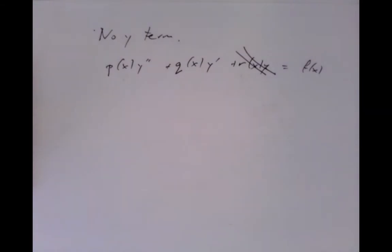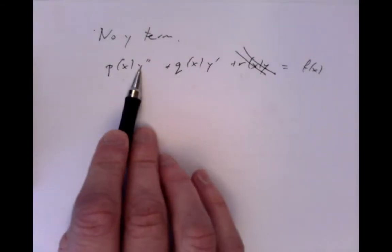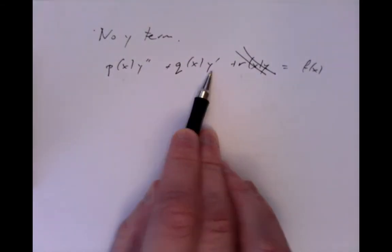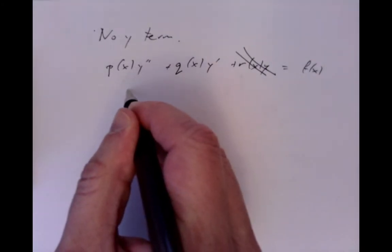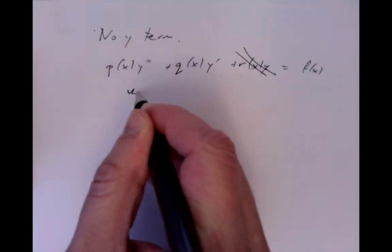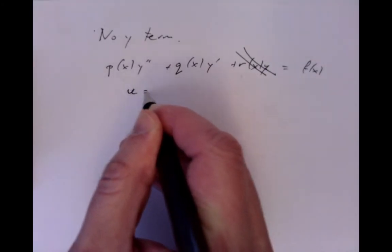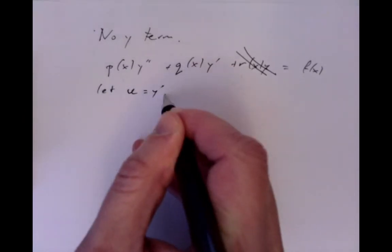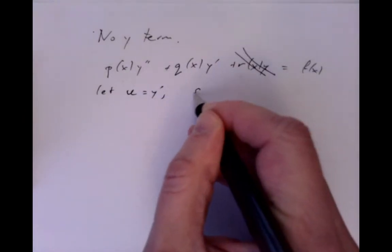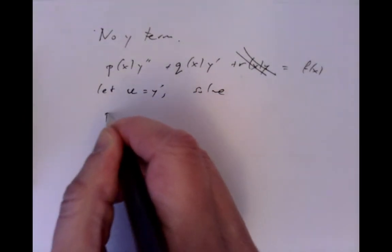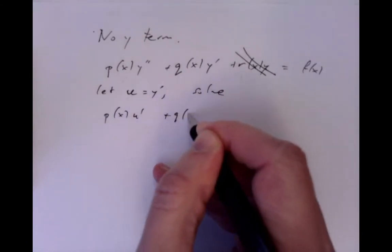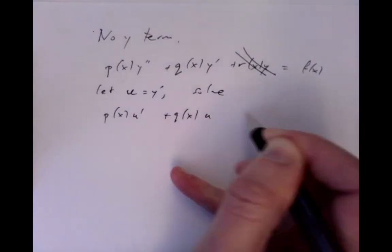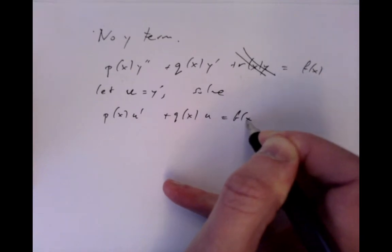So how do we deal with that? Well, there's no y's, there's only y primes and y double primes. So what we can do is we can try to set — let's let u equal y prime. So then we'll solve instead p(x) u prime plus q(x) u equals f(x).